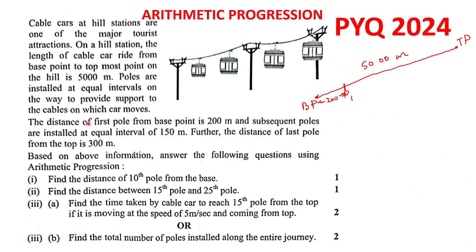After that, subsequent poles are installed at equal intervals of 150 meters — so every 150 meters there is one pole: P2, then 150 meters more for P3, and so on. Further, the distance of the last pole from the top is 300 meters, meaning if here is the last pole Pn, this distance is 300 meters from the top point.